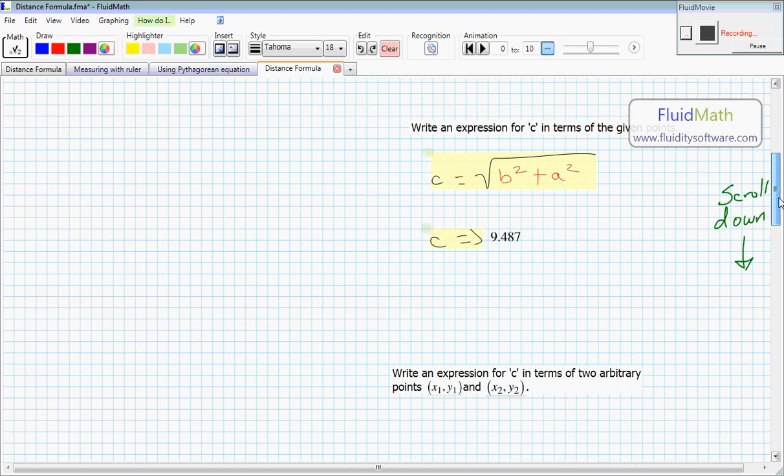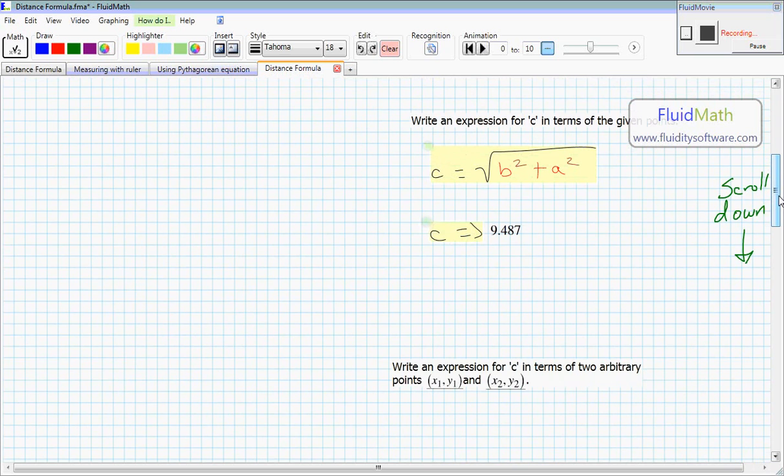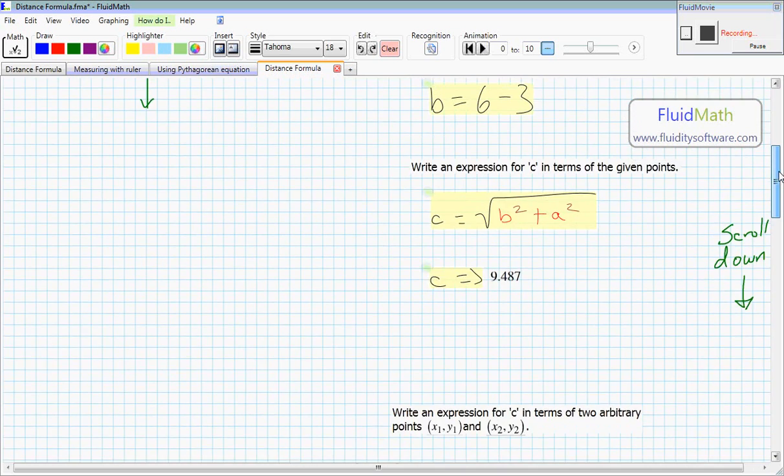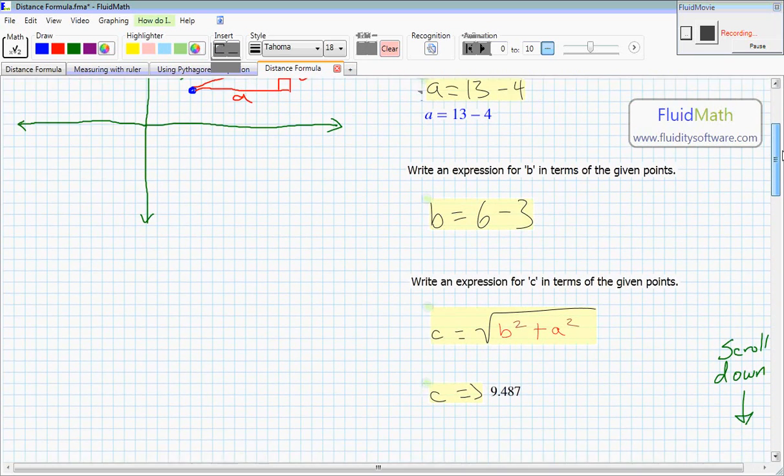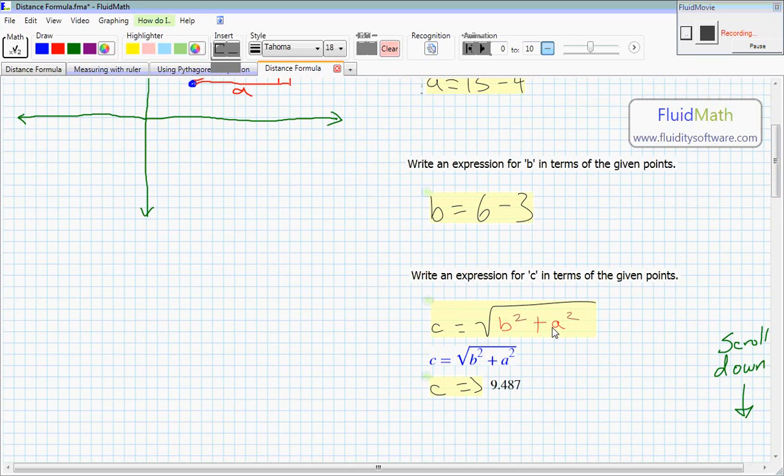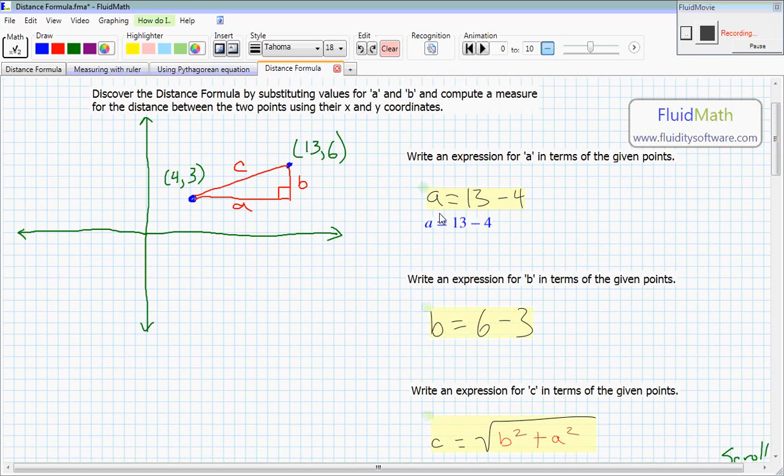So scroll down. Write an expression for c in terms of two arbitrary points, x1, y1, and the other point, x2, y2. Okay, so we can see that b and a were equal to these equations where these numbers came from the coordinate pairs.